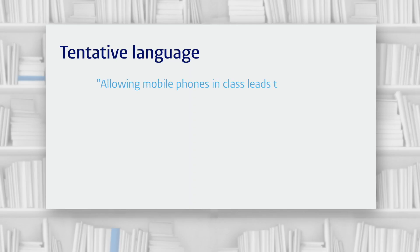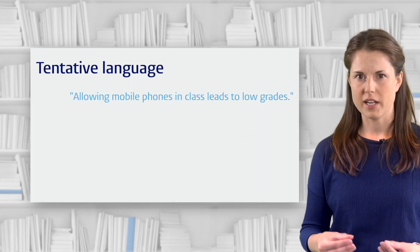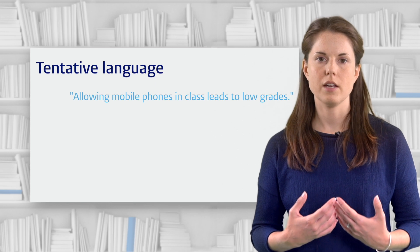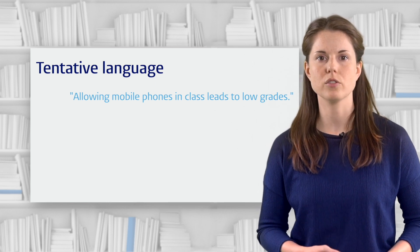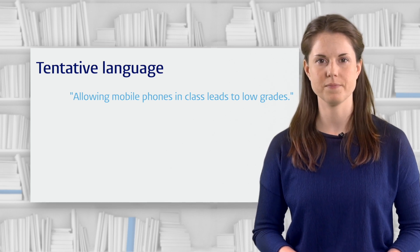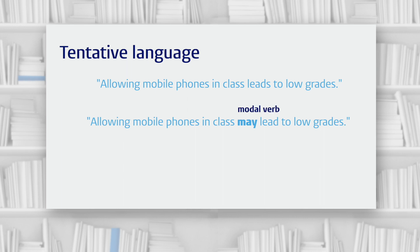To see how to do this, let's take an example: 'Allowing mobile phones in class leads to low grades.' This statement is very bold — it doesn't allow for any exceptions or any grey areas at all. So if a reader could show us one class where students used phones and got high grades, we'd be proven wrong. Let's see what happens when we soften this statement: 'Allowing mobile phones in class may lead to low grades.' 'May' is a modal verb, and the effect of using it here is to soften the statement and allow for a certain amount of disagreement or discussion. You'll notice that it's now much harder to argue against this statement. Other modal verbs we could use here with the same effect are 'can,' 'could,' and 'might.'